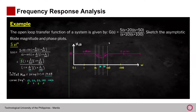To summarize: every pole contributes minus 20 dB per decade to the slope, and every zero contributes plus 20 dB per decade. That is the Bode magnitude plot.